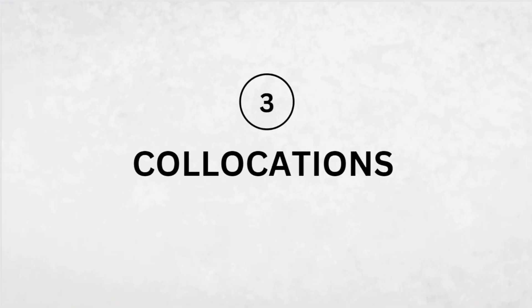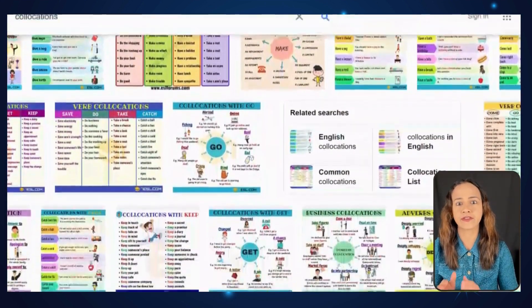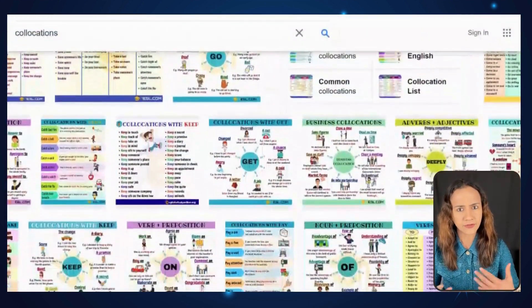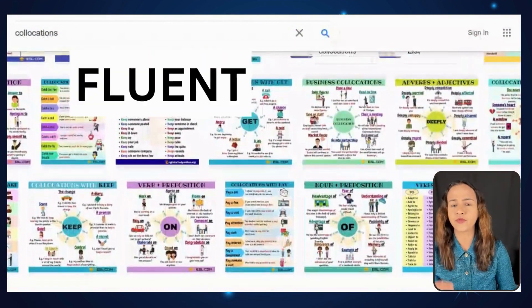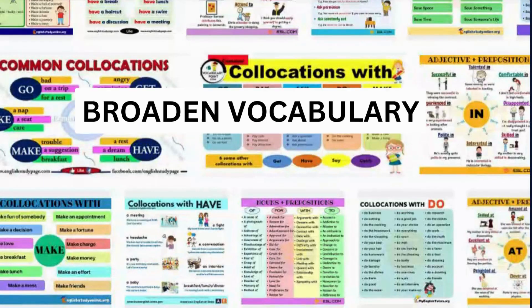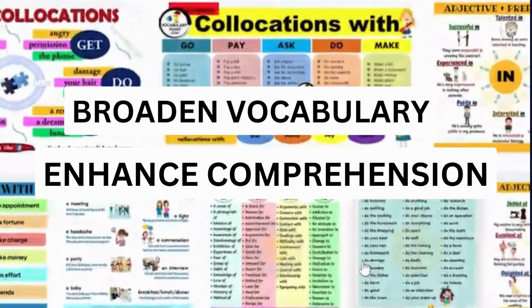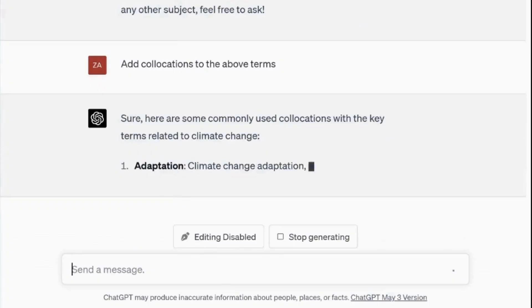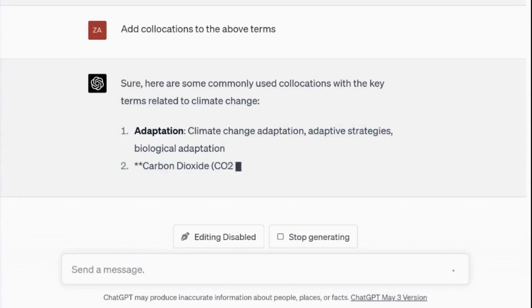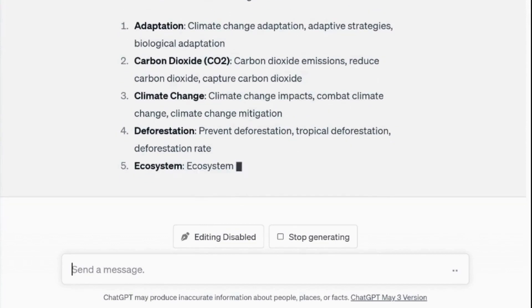Number three: collocations. Collocations are word combinations that frequently occur together. Learning about collocations is important for fluent and accurate use of language. They not only broaden students' vocabulary, but also significantly enhance their overall comprehension skills. The prompt is simply: add collocations to the above terms. And here we have some common collocations used with the key terms.